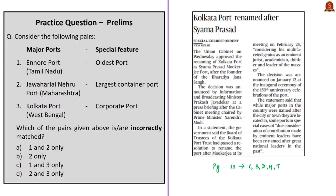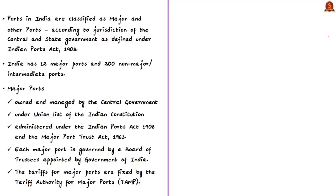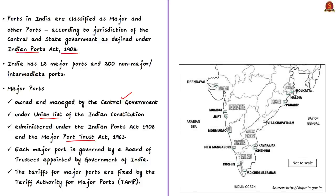Let's take up a question based on major ports. The Union Cabinet approved renaming of Kolkata Port as Shyama Prasad Mukherjee Port. He was an eminent jurist, academician, thinker, leader of the masses, and founder of the Bharatiya Jana Sangh. Ports in India are classified as major or other ports as per jurisdiction of central and state governments under the Indian Ports Act of 1908. Major ports are owned and managed by the central government, listed in the union list of the 7th Schedule, and administered under the Indian Ports Act of 1908 and the Major Port Trust Act of 1963.